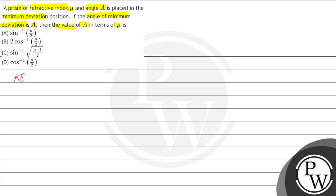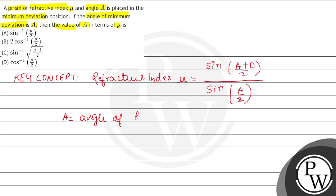In this question, we will use the key concept. We know that refractive index mu is equal to sin of (A plus D) by 2, divided by sin of A by 2. Where A is the angle of prism, and D is the angle of minimum deviation.